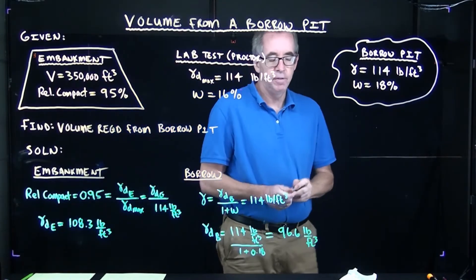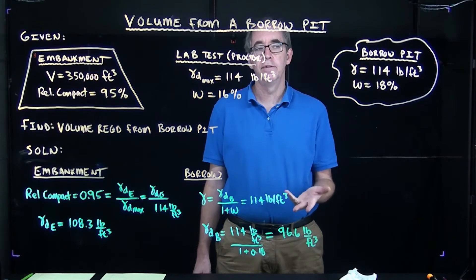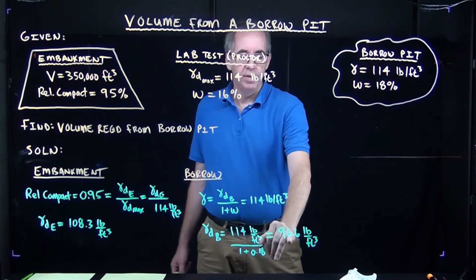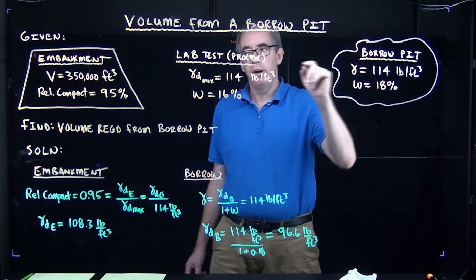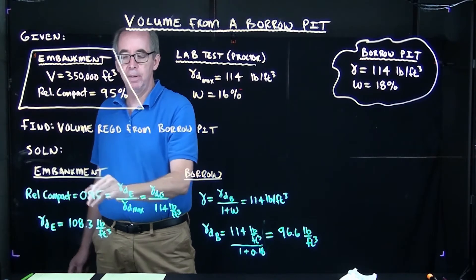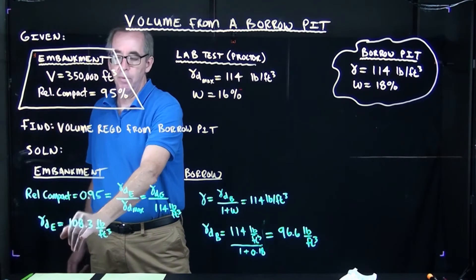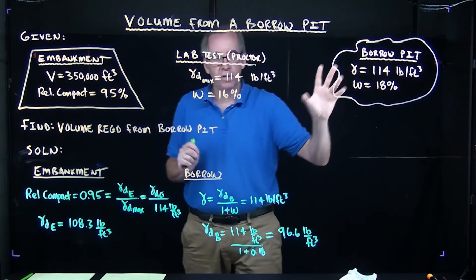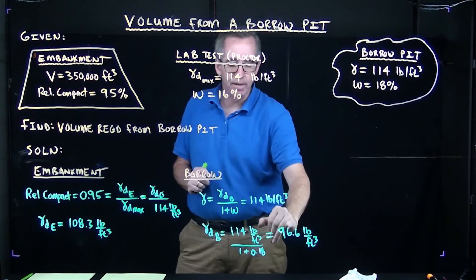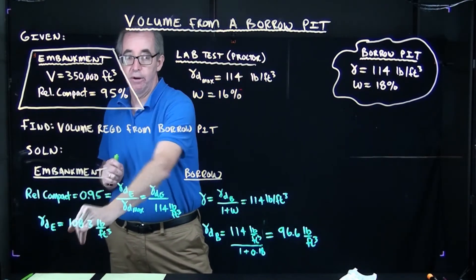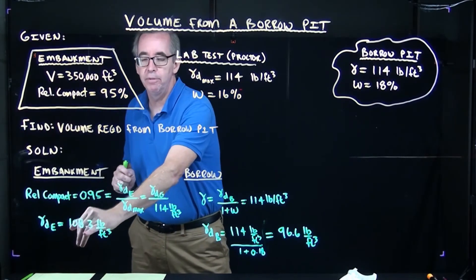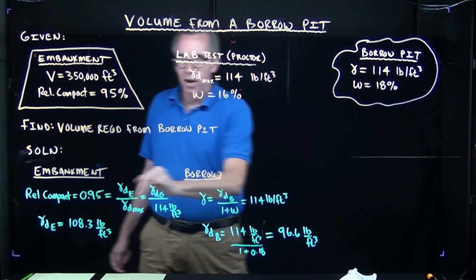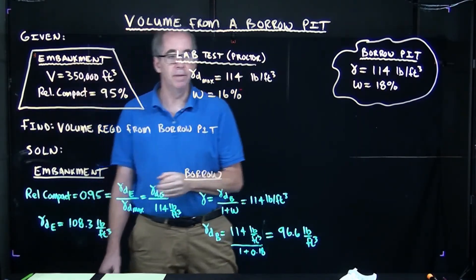There lies the rub of the project. The critical numbers are 96.6 and 108.3. The borrow pit soil in its natural condition has a dry unit weight of 96.6 pcf, but once placed in the embankment and compacted, it must reach a dry unit weight of 108.3 pcf. So we just can't take 350,000 cubic feet from the borrow pit and be done with it — we need more, because compacting the soil from 96.6 to 108.3 reduces its volume, so we need enough material to still yield 350,000 cubic feet after compaction.